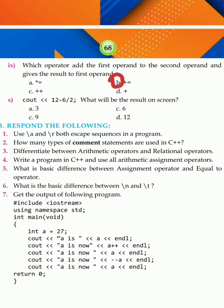Question 10: 12 minus 6 divided by 2 — what will be the result on screen? If we subtract 6 from 12 we get 6, then divide by 2. In the table of 2, which number reaches 6? We know 2 times 3 is 6, so the answer is 3 — option A.